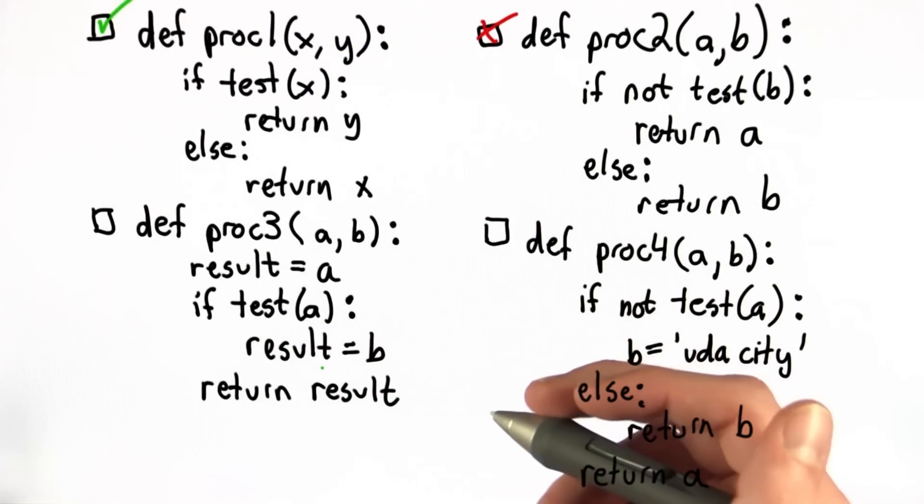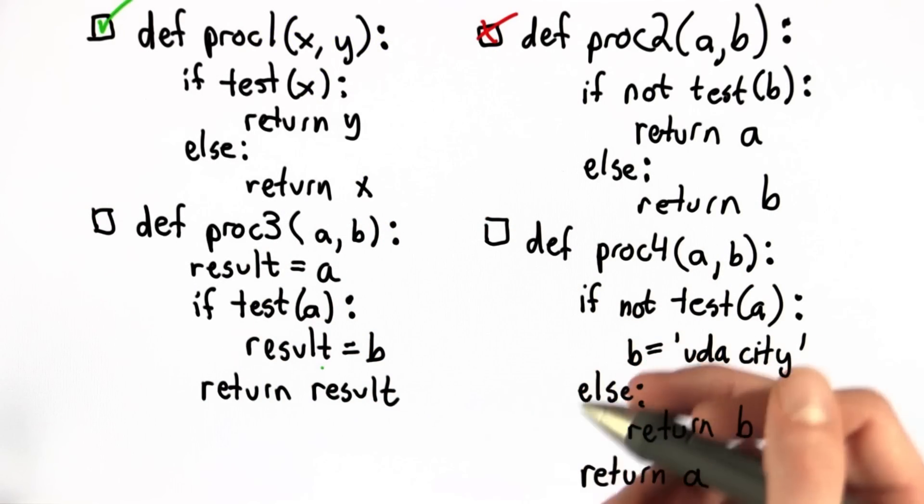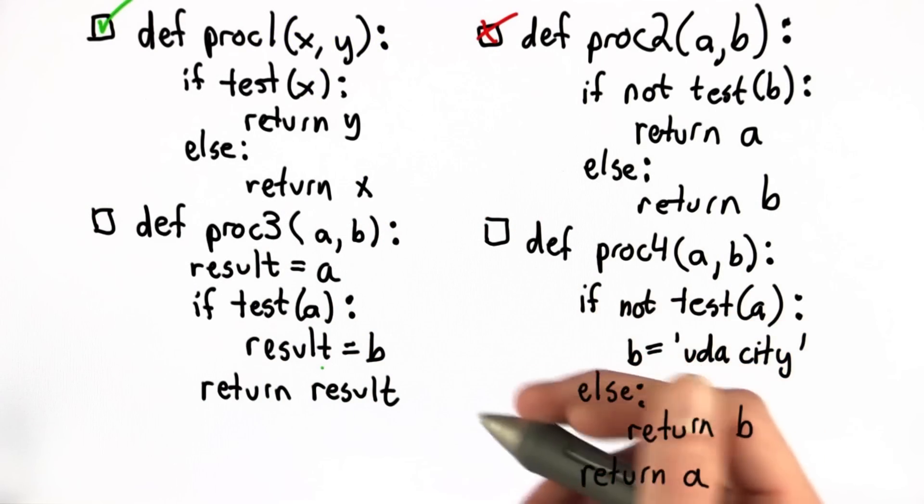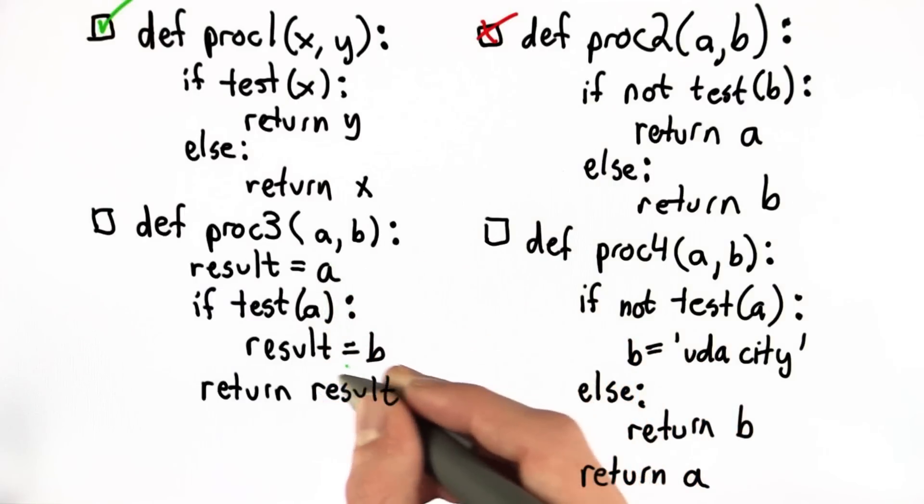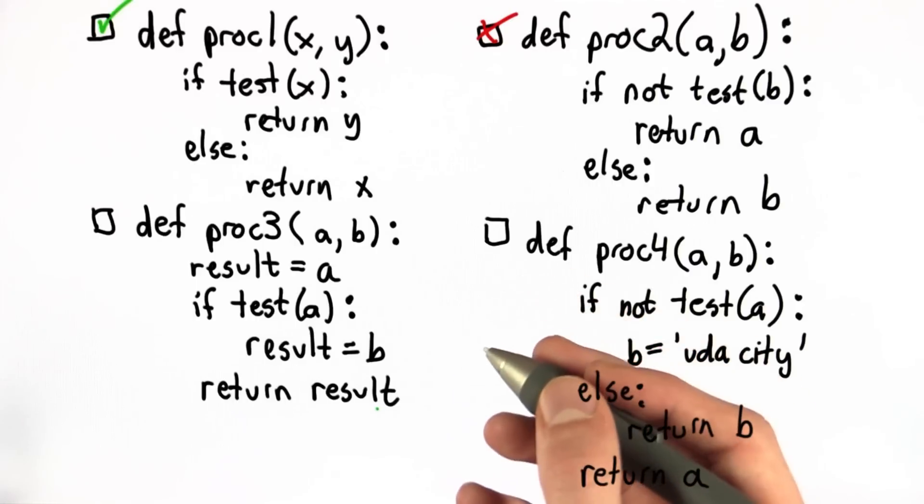Let's look at proc 3. The structure here is a little different, but let's work our way through it by going through both of the examples. In the event that test a is true, we set result to b and we return result. So as our original function did, if test a is true, we return b.